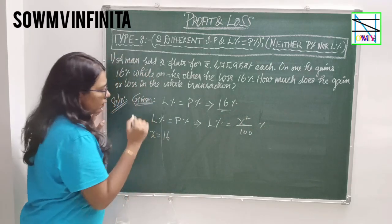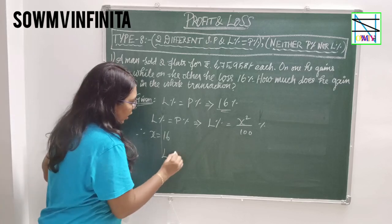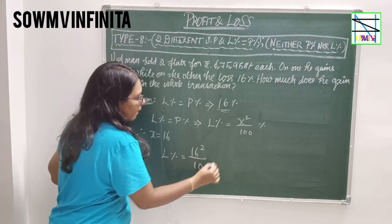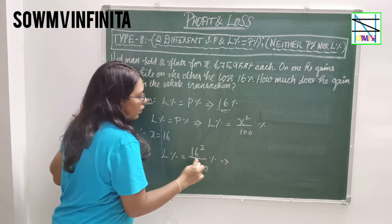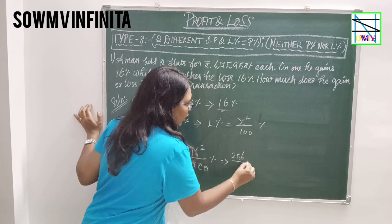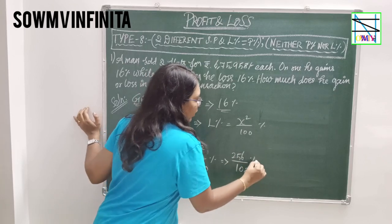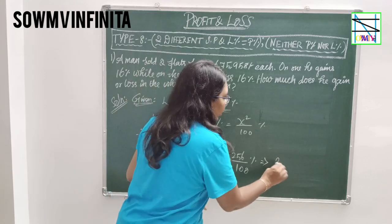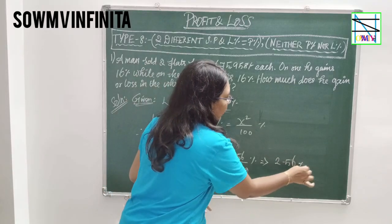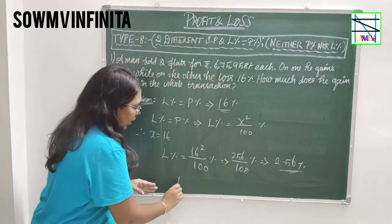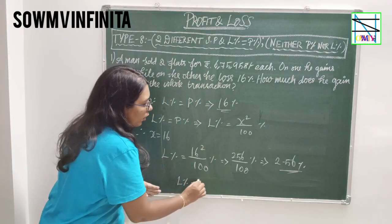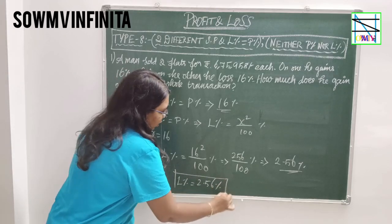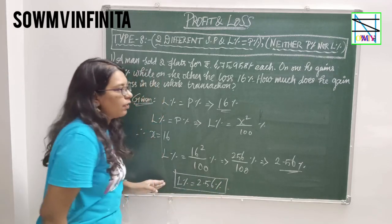Therefore, Loss Percent = 16² / 100 = 256 / 100 = 2.56%. So the Loss Percent is equal to 2.56%. This is the loss value.